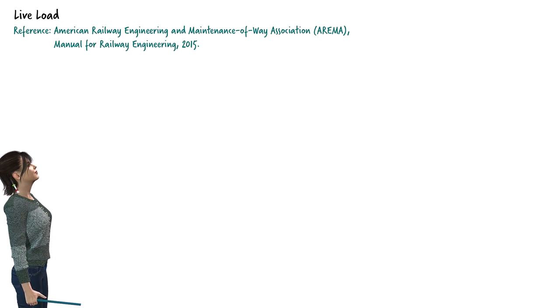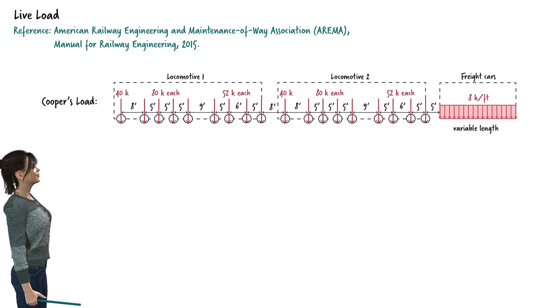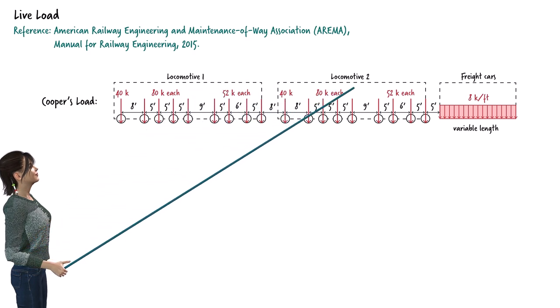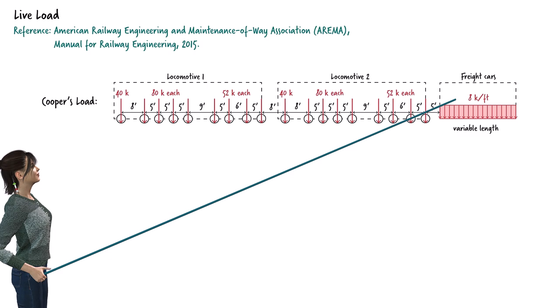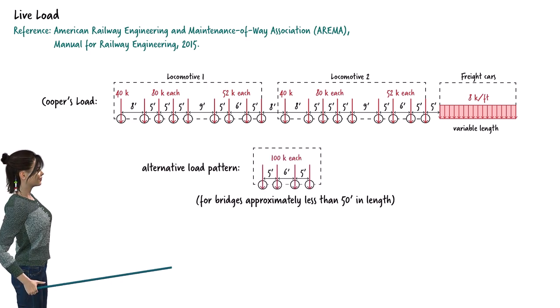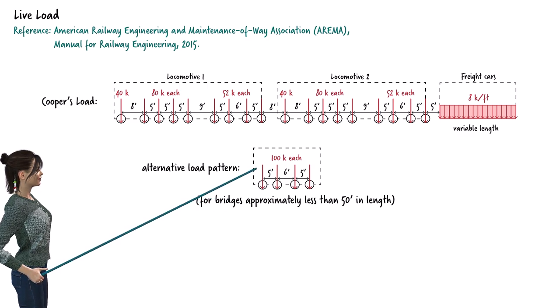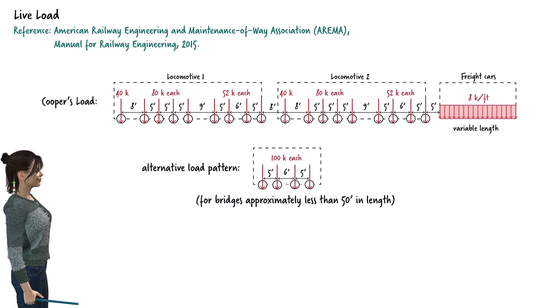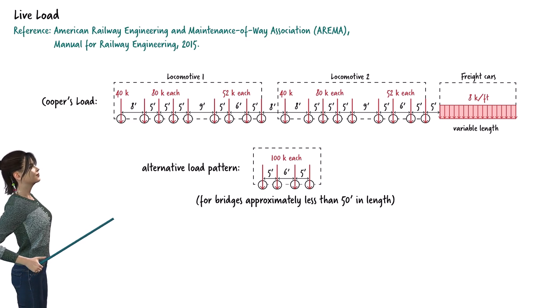The American Railway Engineering and Maintenance of Way Association provides two live load arrangements for the design of railroad bridges. The standard pattern is referred to as Cooper's load. It consists of a series of concentrated loads and a variable length uniformly distributed load, based on two locomotives, and trailing cars represented by a uniformly distributed load of 8 kips per foot. For short-span bridges, an alternative load pattern of four concentrated loads of 100 kips each can be used for bridges shorter than 50 feet. Since our bridge has a length of 80 feet, we need to use Cooper's load pattern.